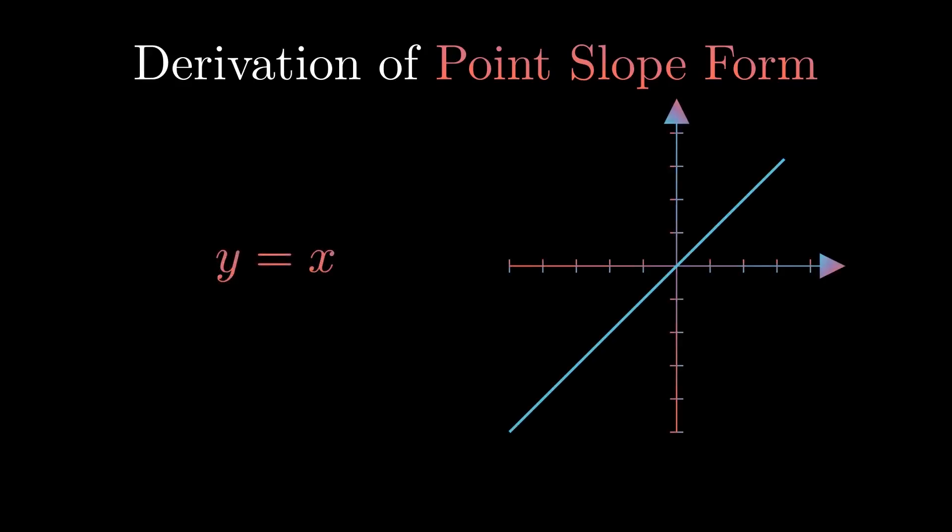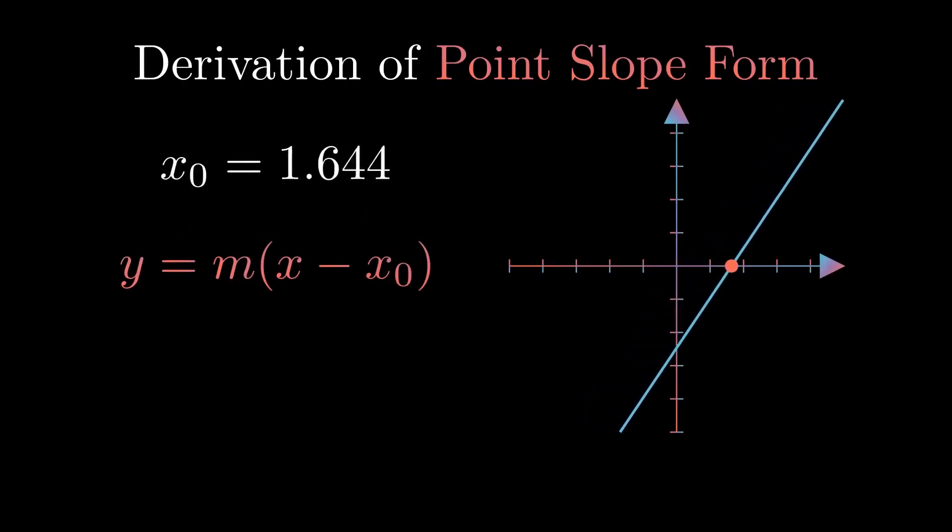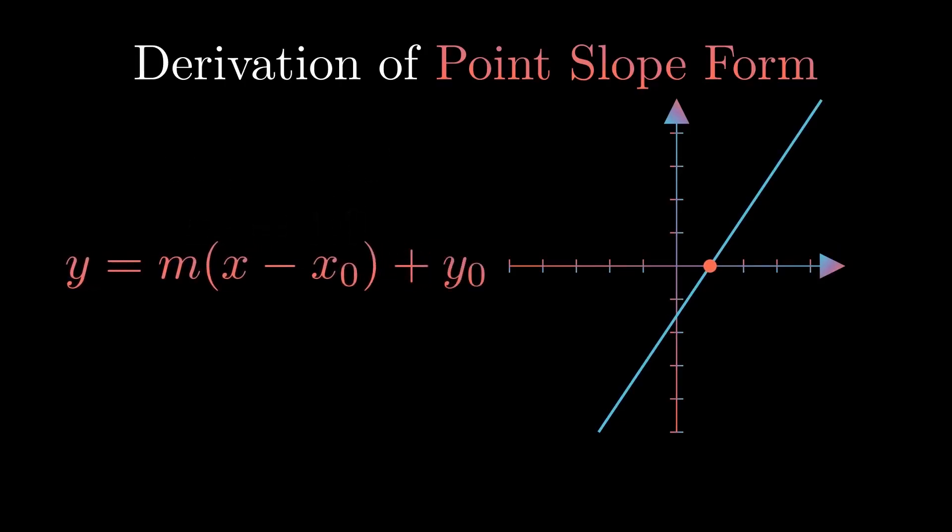First you start with a normal line y equals x. Then you add a slope m. Changing this value allows you to change the slope of the line. Next, you shift it by some value x0 in the x direction, which will be the x coordinate of the point you want to intercept. You do the same in the y direction by adding y0 to the equation.